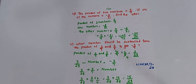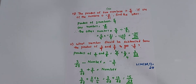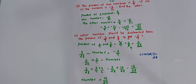Now, what number should be subtracted from that product to get minus 3 by 7? You have to subtract a number from 3 by 28 to get minus 3 by 7. Take the unknown number to the other side and take minus 3 by 7 to this side. You get 3 by 28 plus 3 by 7 equals that number. Find the LCM — LCM of 28 and 7 is 28. After adding, you get 15 by 28. Therefore, the required number equals 15 by 28.